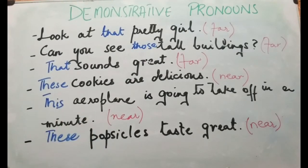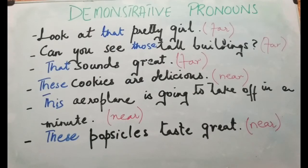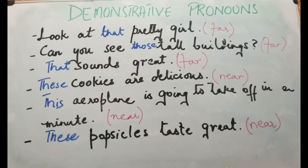I hope today's video was clear. Let me repeat: demonstrative pronouns represent a thing or things. 'This' and 'these' indicate near distance or time; 'that' and 'those' indicate far distance or time. They can be singular or plural, and they may act as subject or object in a sentence. If you have any questions, please leave them in the comment section below. Thanks a lot!